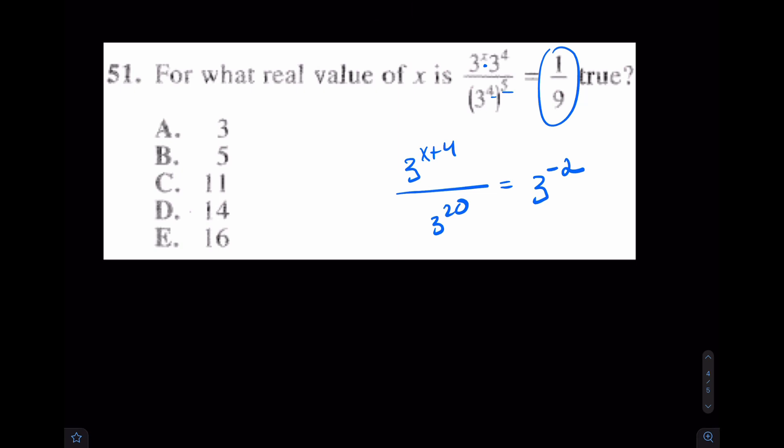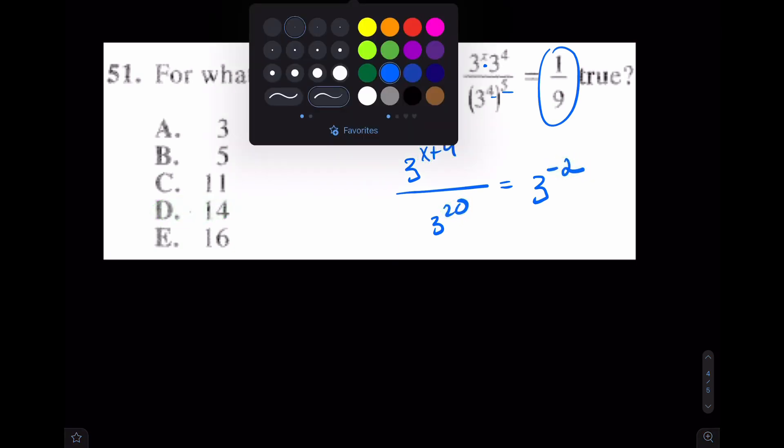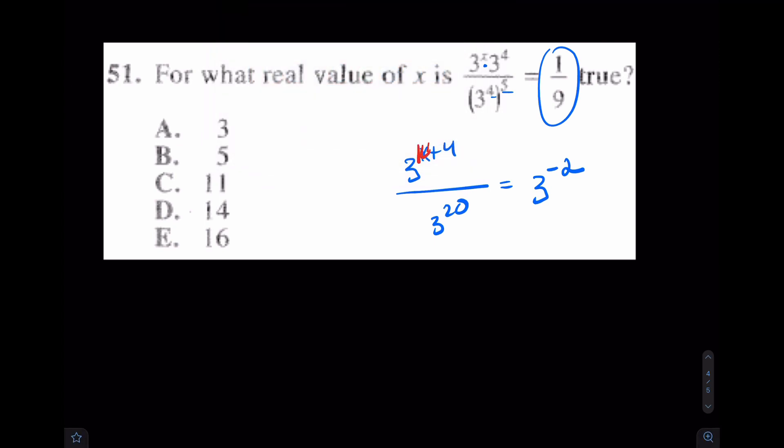From here, you have a few ways of seeing this, but really, I already know that the answer is D, 14. Why? Well, 14 plus 4 would give you 18. 18 minus 20 would be the only way you get negative 2. I'll say that one more time. Again, x has to be 14 because 14 plus 4 gets you to 18. Then, through subtraction, 18 minus 20 would be the only way that you get to negative 2. The answer is D.